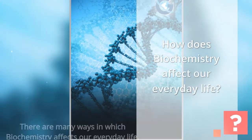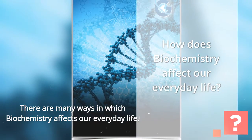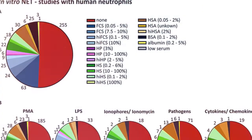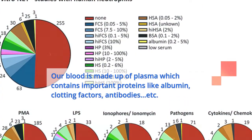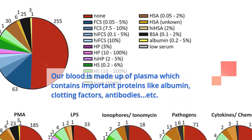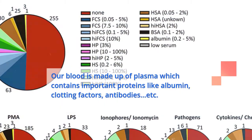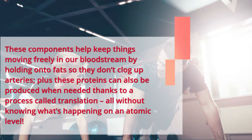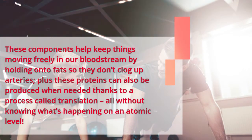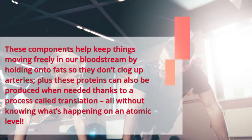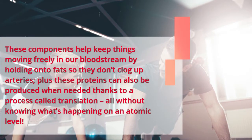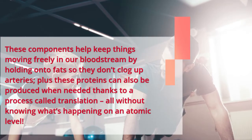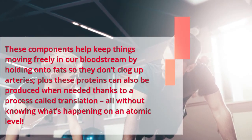How does biochemistry affect our everyday life? There are many ways in which biochemistry affects our everyday life. Our blood is made up of plasma which contains important proteins like albumin, clotting factors, and antibodies. These components help keep things moving freely in our bloodstream by holding on to fat so they don't clog up arteries. Plus, these proteins can also be produced when needed thanks to a process called translation, all without knowing what's happening on an atomic level.